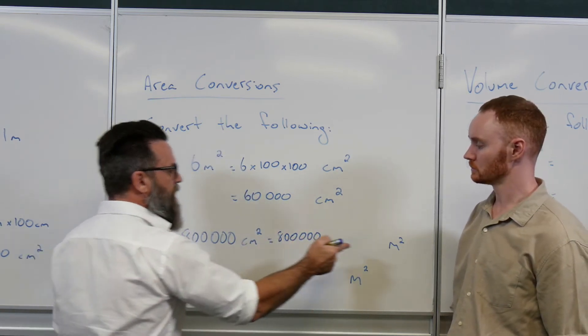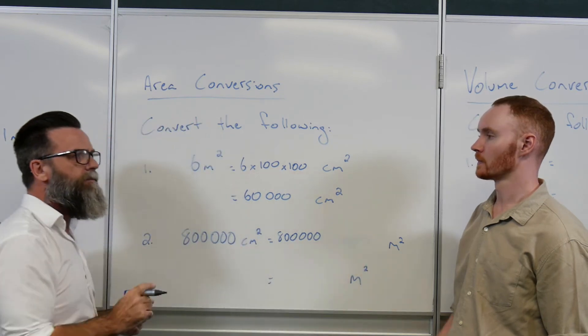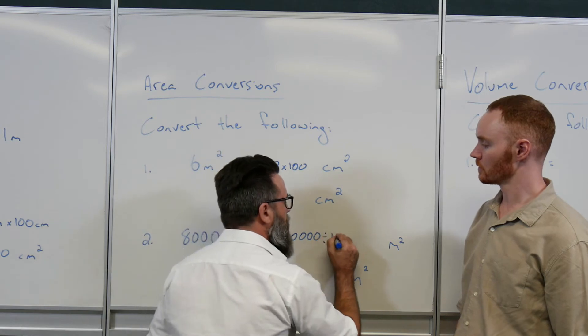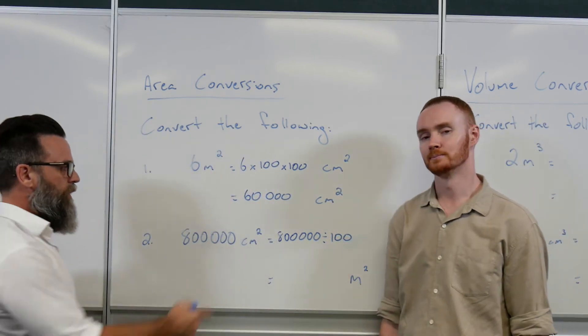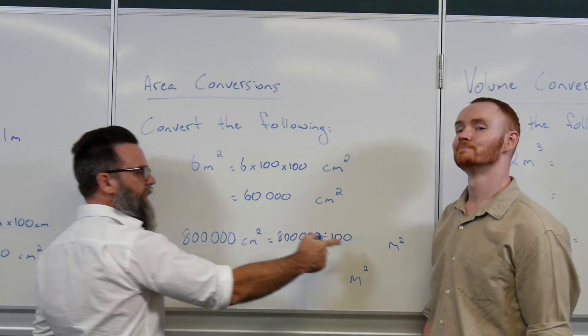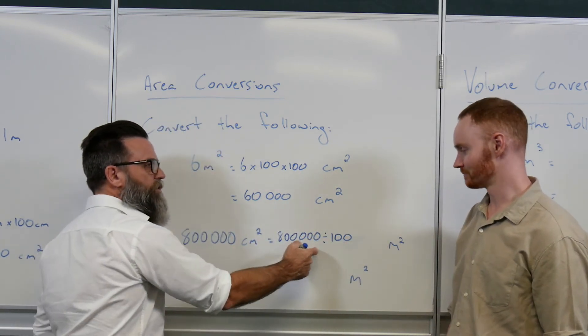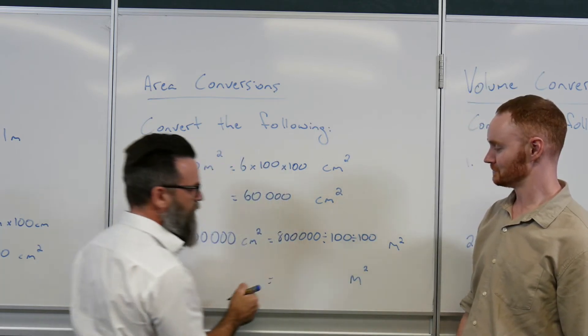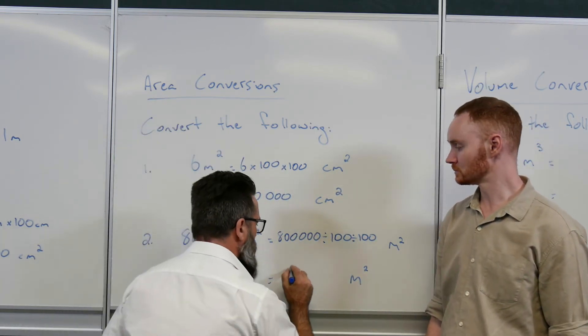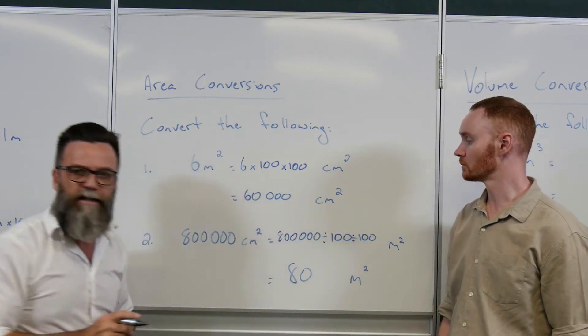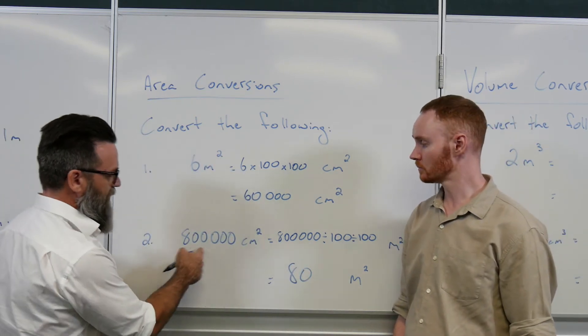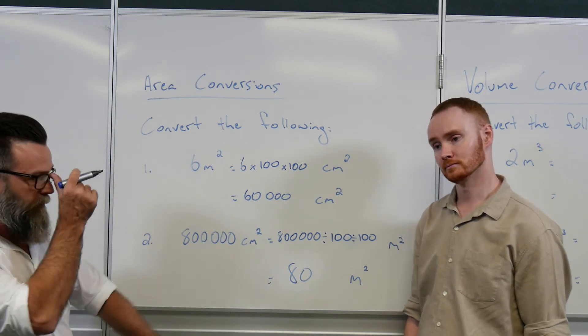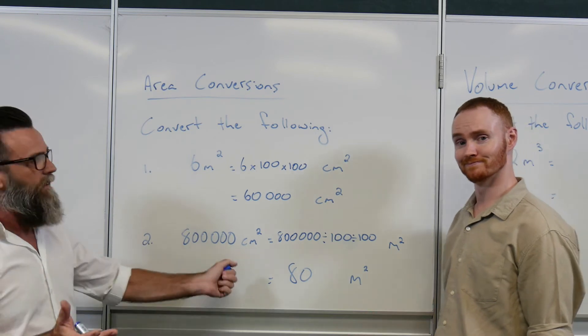Now how many centimeters in one meter? 100. Absolutely. So we know that if we just had centimeters and meters, we would need to divide that by 100, but we don't. We've got centimeters squared and meters squared, so what else do I need to add to here? Divide it again. He's so good, this guy! Divide by 100 again. So divide by 100, divide by 100, and we get a final answer of 80 meters squared. So if we've got this gigantic 800,000 centimeters squared, we're actually only talking about 80 meters squared.